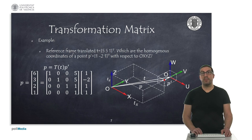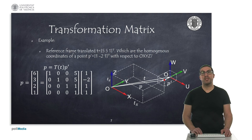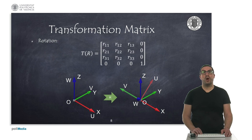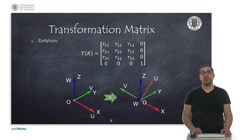In this first example, we want to obtain the coordinates of a point P with respect to the fixed frame OXYZ, given that the point is expressed with respect to the mobile frame OUVW. Calculating the coordinates of a point is as simple as computing the multiplication of T, the transformation matrix, with P'. A reference frame can be represented with an arbitrary rotation matrix R, whose homogeneous transformation matrix takes the form shown, where the rotation matrix is a submatrix of the transformation matrix.